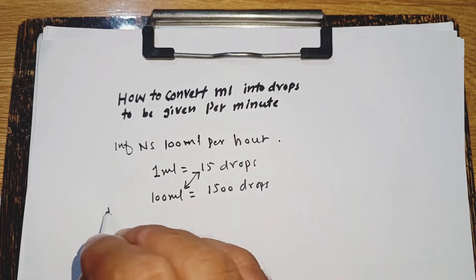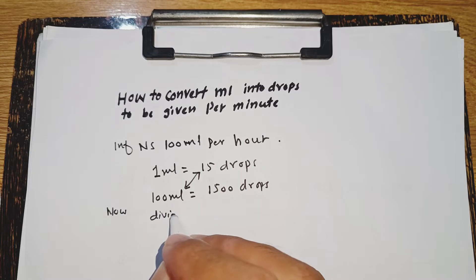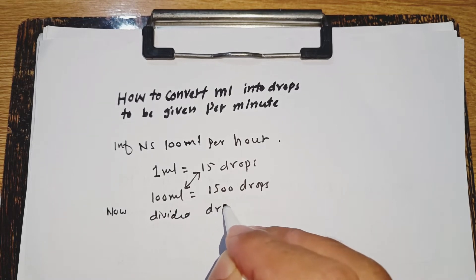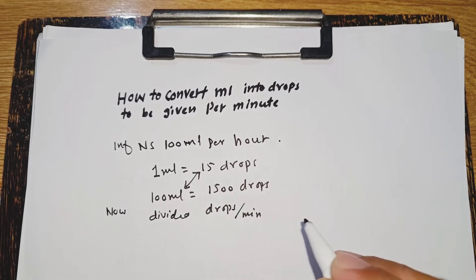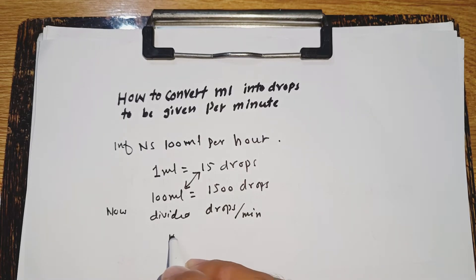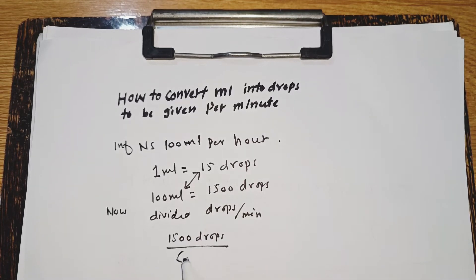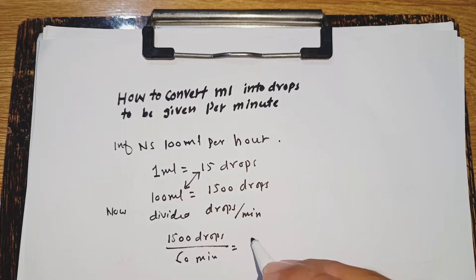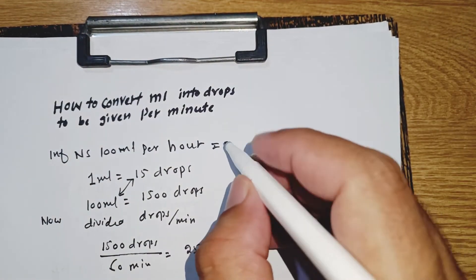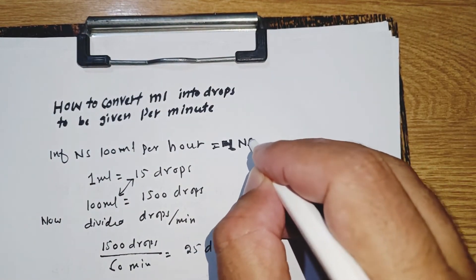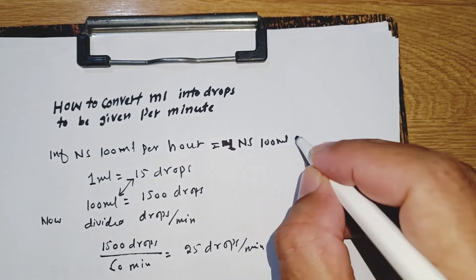Now divide the total drops by total minutes. The total drops are 1500, and in one hour we have 60 minutes, so 1500 divided by 60 equals 25 drops per minute. We can write it as: infusion NS 100 mL IV at the rate of 25 drops per minute.